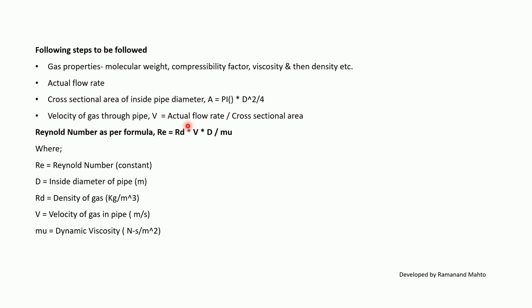Then the Reynolds number is calculated as: Re = ρ × V × D / μ, where Re is the Reynolds number, D is the inside diameter of pipe in meters, ρ (Rd) is the density of gas in kg/m³, V is the velocity of gas in the pipe, and μ (M) is the dynamic viscosity.